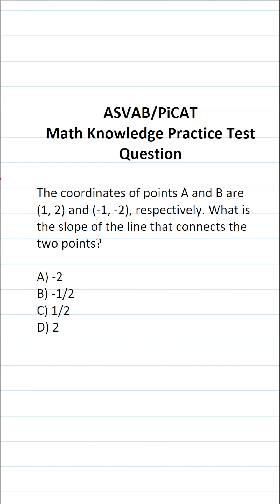This math knowledge practice test question for the ASVAB and PiCAT says the coordinates of points A and B are (1, 2) and (-1, -2), respectively. What is the slope of the line that connects the two points?